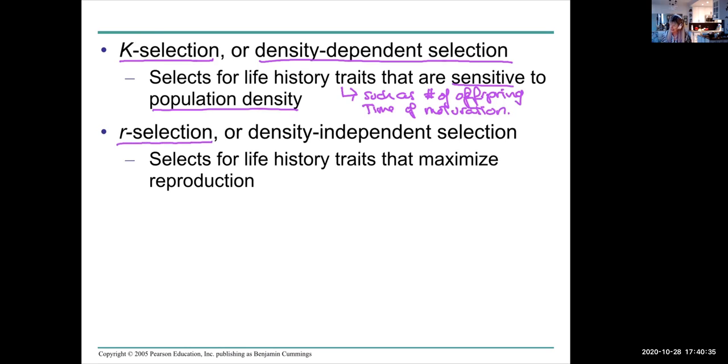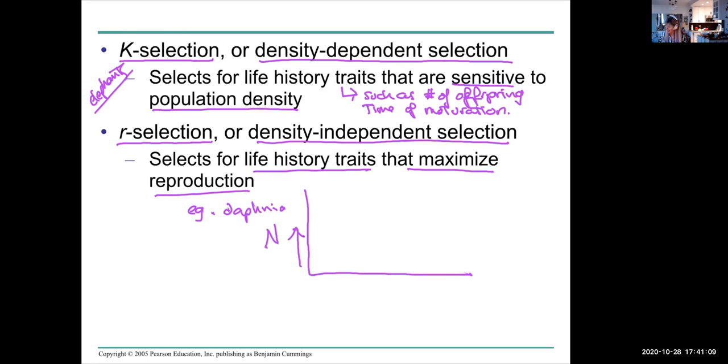An R selected species, or R selection, is independent of density. They select for life history traits that maximize reproduction. An example of that is, say, Daphnia. Our example here was elephants. Our example could be Daphnia. Daphnia are small invertebrates that live in streams. This is population size, this is time. They have a limited time for their population to explode, so they tend to explode exponentially like that. They have a very, very high birth rate, very early maturation.